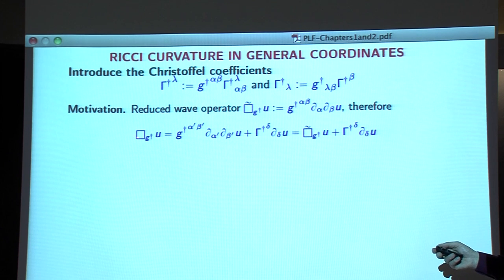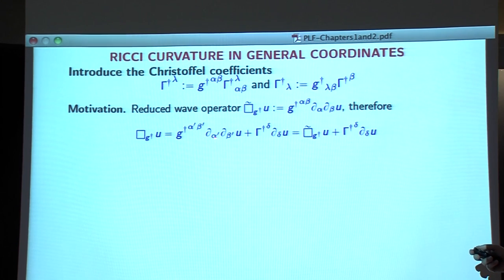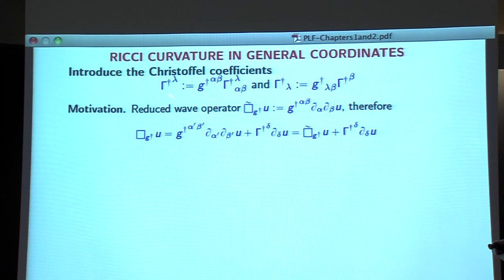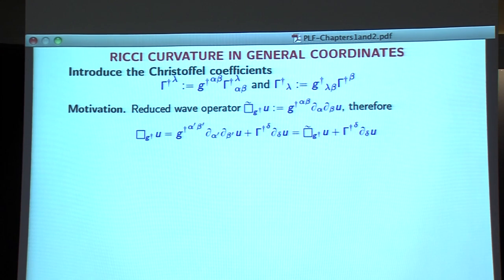The geometric wave operator applied to some function u, Box_{g†}(u), is given by two terms: second-order derivatives and first-order derivatives involving the Christoffel symbols — that's just the definition. I now define the reduced wave operator, denoted Box̃. It coincides with the wave operator precisely if and only if these Γ with only one index are vanishing. The wave condition we will impose is exactly that these Γ† are equal to zero.